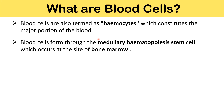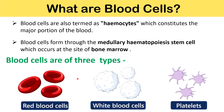Blood cells are also termed as hemocytes, which constitute the major portion of the blood. Blood cells form through medullary hematopoiesis from stem cells, which occurs at the site of bone marrow. Blood cells are of three kinds: RBCs (red blood cells), WBCs (white blood cells), and platelets.